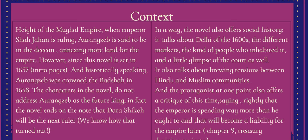Since the novel is set in 1657, and the introductory pages tell us that historically Aurangzeb was crowned Badshah in 1658, the characters do not address Aurangzeb as the future king. Shah Jahan had wanted Dara Shikoh to be the next king, so they all expect Dara Shikoh to be the next emperor. The novel is thus set at a time when people do not know what is going to happen — they do not know that Aurangzeb will eventually take the throne.